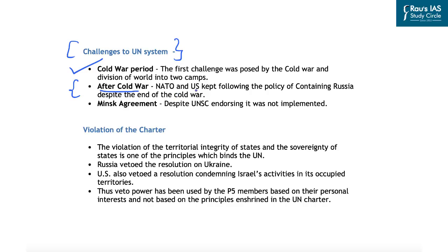NATO and the US kept following a policy of containing Russia despite the end of the Cold War and despite assurances given by the US and UK not to expand NATO's membership after the Cold War. Despite those assurances, membership kept increasing, and the borders of NATO countries now directly reach Russia's borders, threatening Russia's security. Even after the Cold War, challenges to the UN system have not ended.